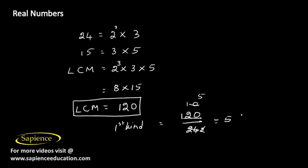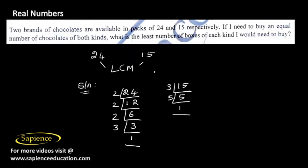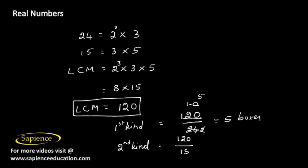And for second kind we need 120 chocolates, and in each box we have 15 chocolates. So 120 divided by 15, dividing by 5 gives 24, and dividing by 3 gives 8. So 8 boxes.